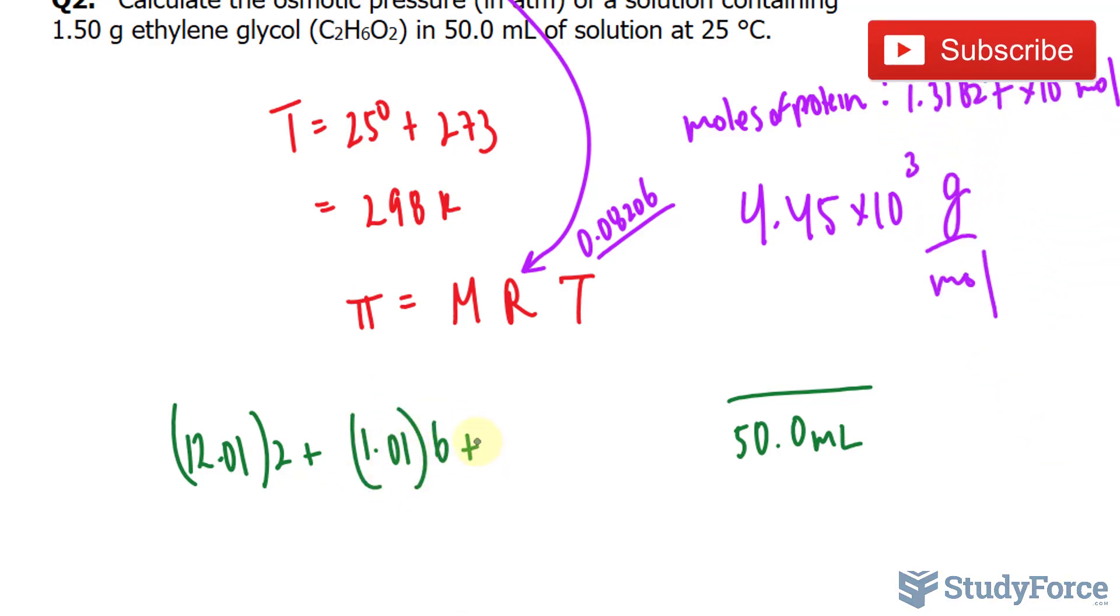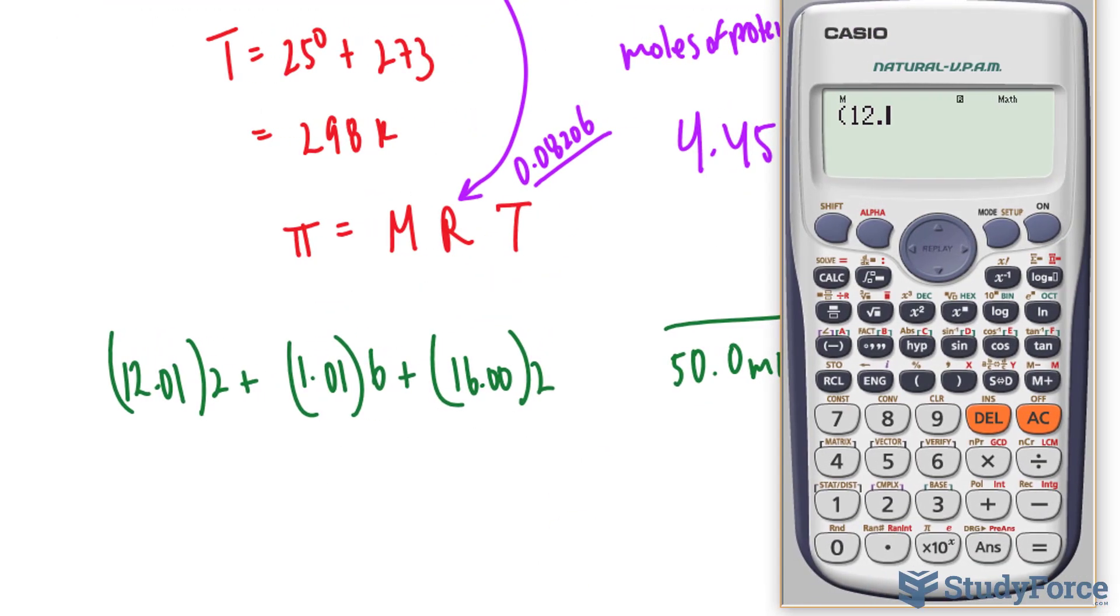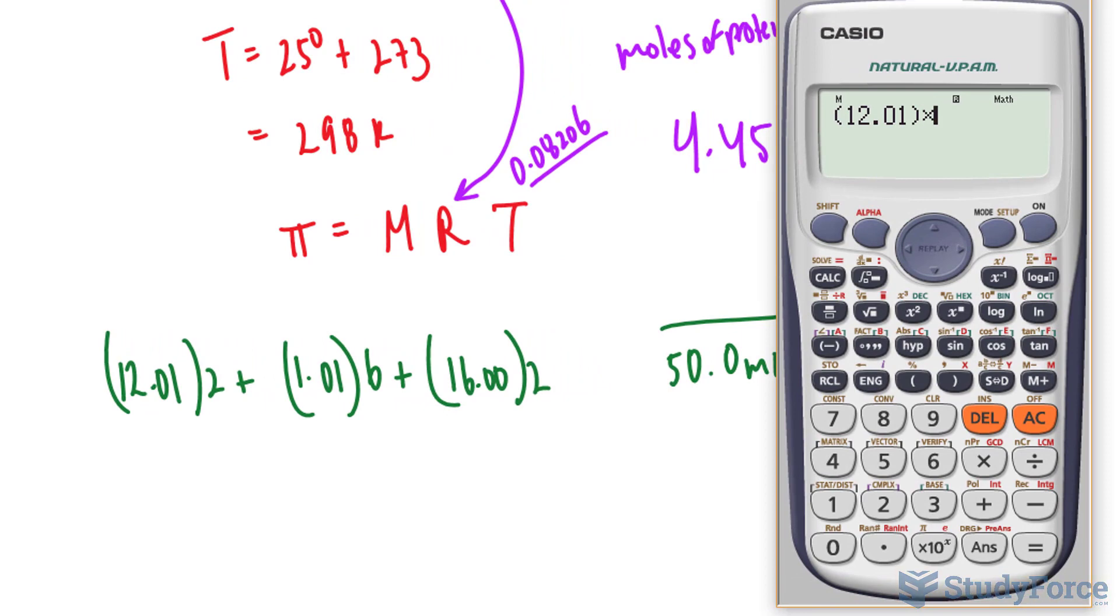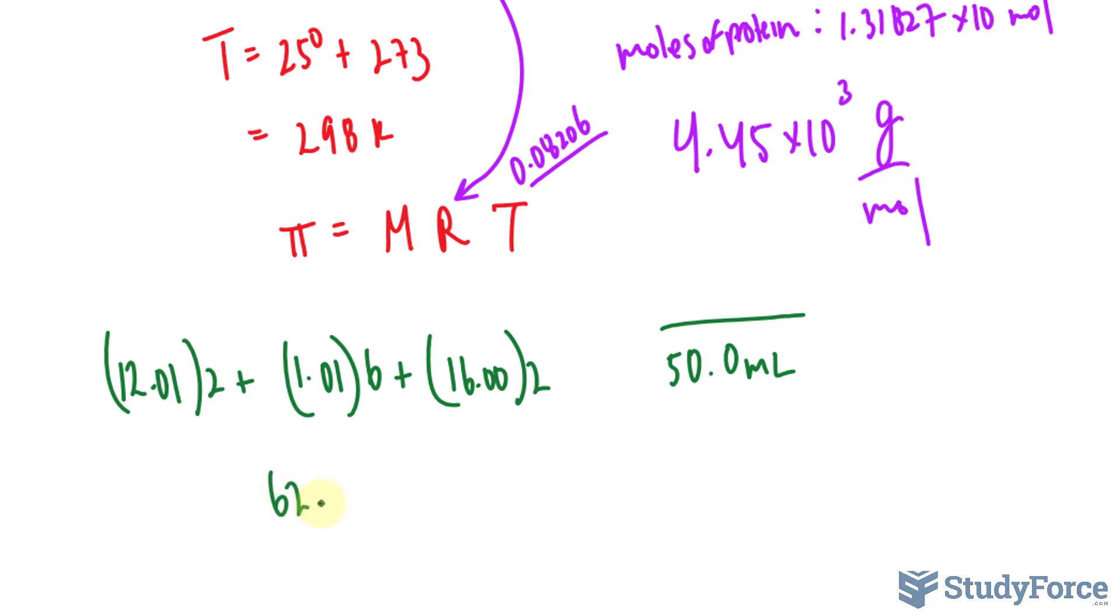times 6 plus 16.00 times 2. Now using our calculator, 12.01 times 2 plus 1.01 times 6 plus 16.00 times 2. We end up with 62.08 grams per mole.